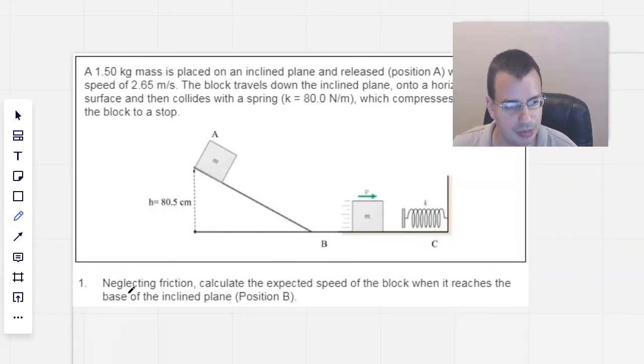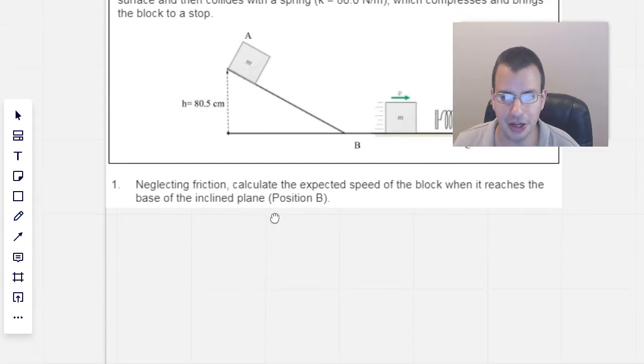So the first question is going to be, neglecting friction, calculate the expected speed of the block when it reaches the base of the incline, position B. Okay, so here this is going to be a conservation of energy.